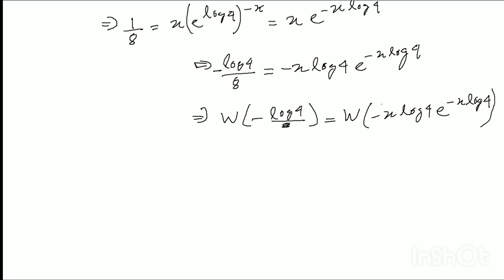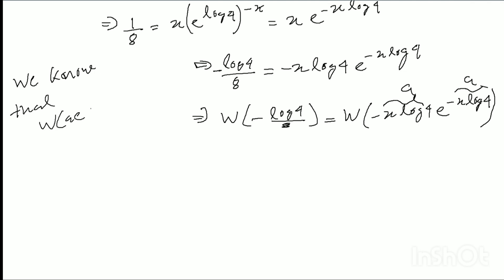We use the important note that the Lambert W function satisfies: W(a times e to the power a) equals a. Here, letting a equal minus x log 4, we apply: W(a times e to the power a) equals a. Note that the formula uses e to the power a, not minus a.